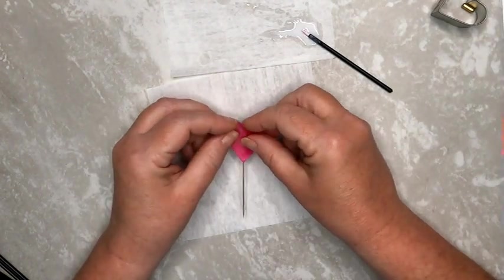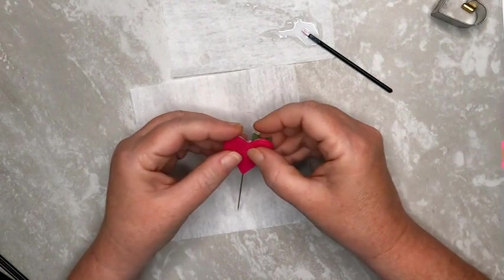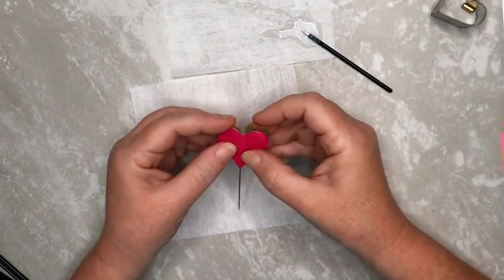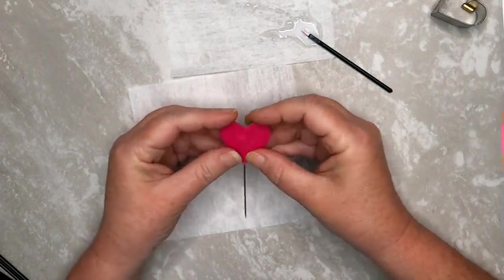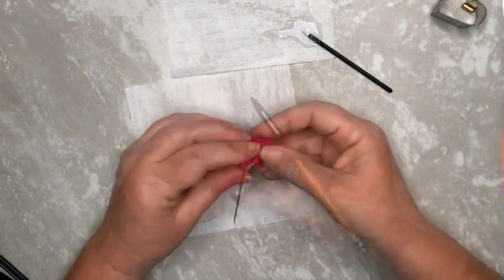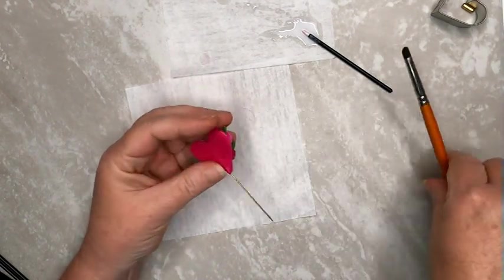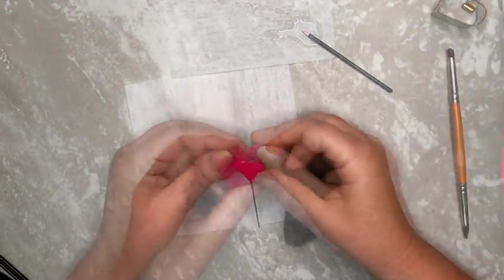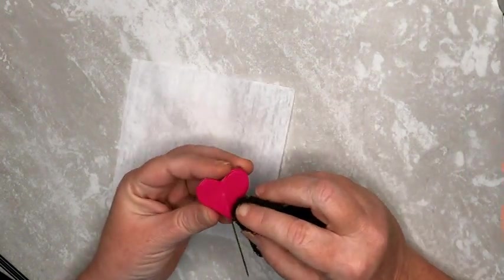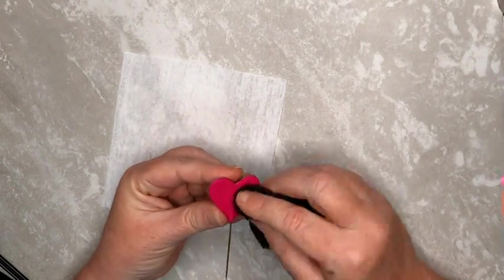Then place the second fuchsia heart over the pin back and press down firmly. Again, you want to work from the center outward to remove any air bubbles. Use a clay shaper to snug the clay around the pin. Use a texture sponge to thoroughly texture the clay.